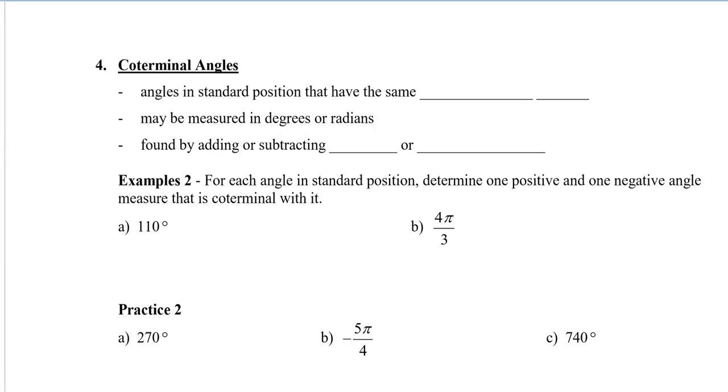In this video, we're going to take a look at coterminal angles and arc length. So coterminal angles are angles that are in standard position, and they have the same terminal arm. That means that they always end in the same position.